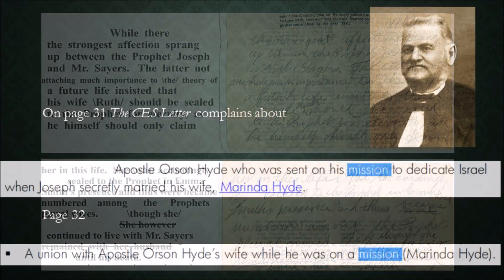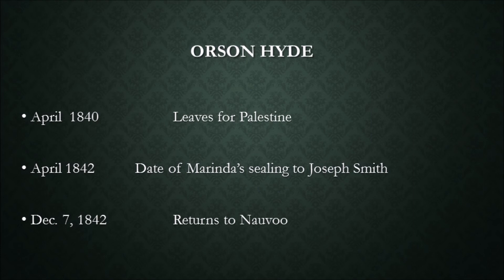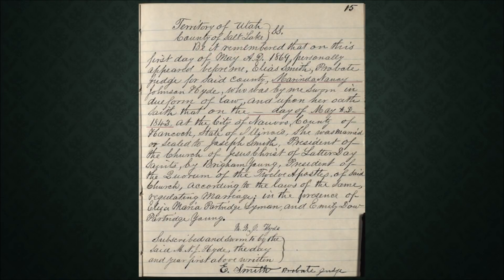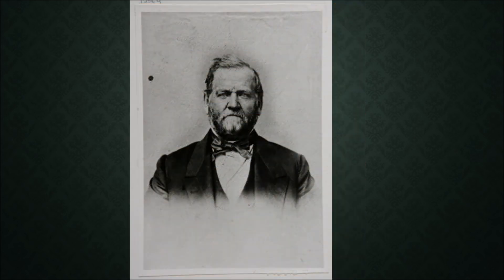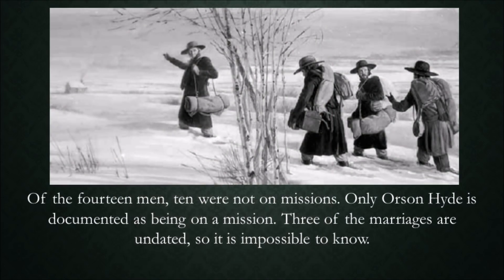On page 31, the CES Letter complains about Apostle Orson Hyde, who was sent on his mission to dedicate Israel when Joseph secretly married his wife, Mirinda Hyde. The chronology shows that Orson left for Palestine in April 1840. An entry on a single page in Joseph's journal in the handwriting of Thomas Bullock states, April 42, Mirinda Johnson to Joseph Smith. However, the author of the CES Letter does not inform his readers that a second date was attested to by Mirinda herself — that is, May of 1843, months after Orson's return. Usually affidavits signed and notarized are considered reliable. Orson Hyde remained true to Joseph and the church throughout his remaining life. Of the 14 men, 10 were not on missions. Only Orson Hyde is documented as being on a mission.